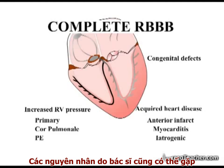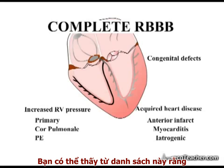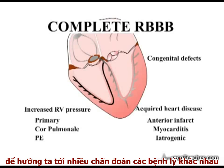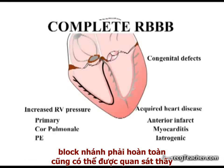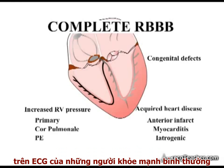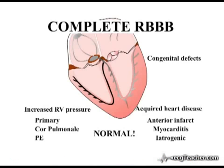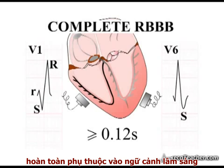Iatrogenic causes are also recognised, such as damage during pacemaker placement or right heart catheterisation. Right bundle branch block on the ECG can be a useful pointer towards a diverse range of significant diseases. However, it is important to realise that complete right bundle branch block is also observed on the ECG of a proportion of healthy individuals with no underlying heart or lung problems. The interpretation of the significance of right bundle branch block on the ECG is completely determined by the clinical context.